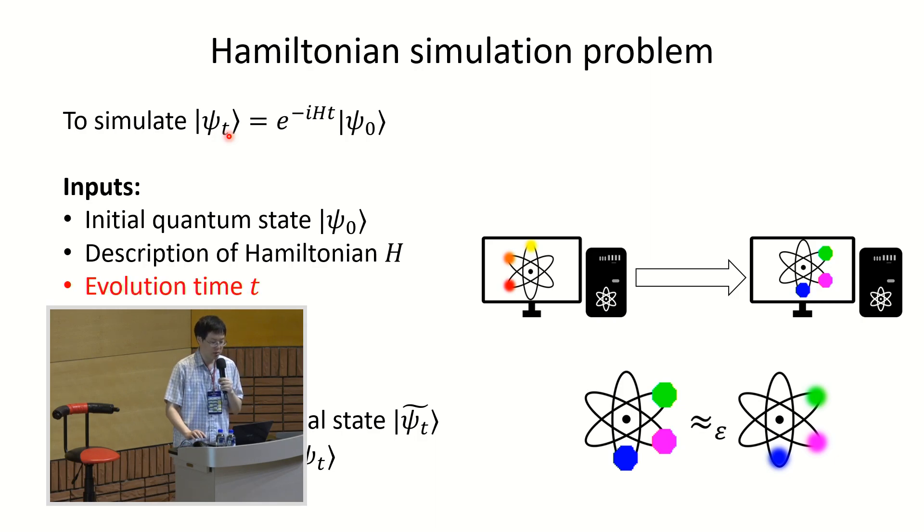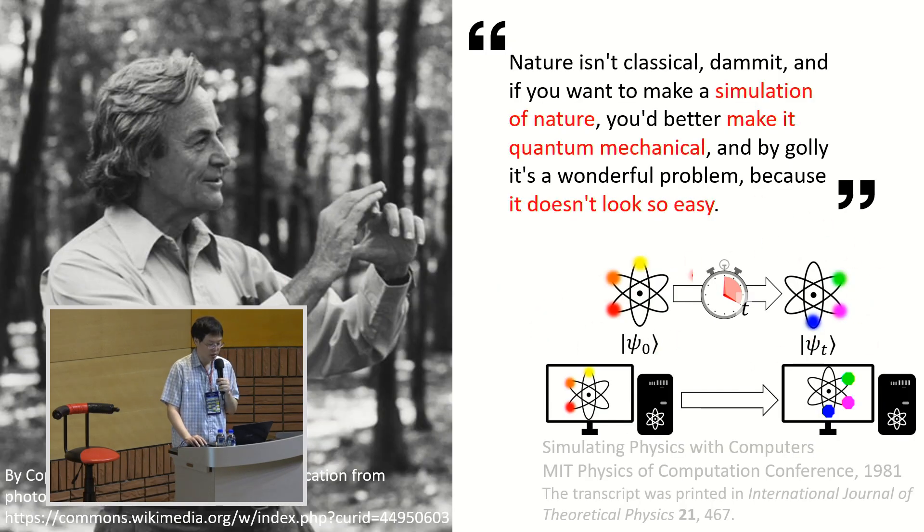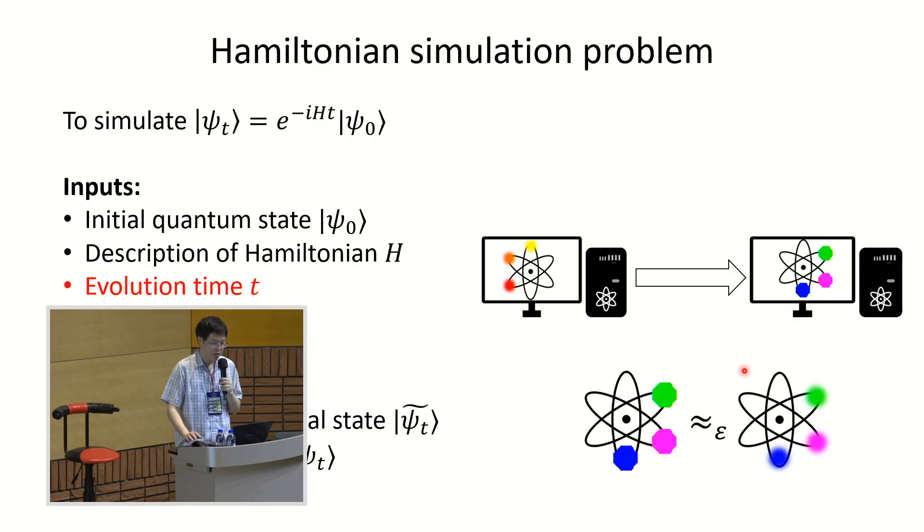So more formally, we have this Hamiltonian simulation problem. So go back to this picture a little bit. The idea is we have this nature that starts from some quantum state psi zero to another quantum state psi t. And we want to have a computer to do the same calculation. So we want to have a computer that starts with some state psi zero in its memory and calculate this psi t after some time. And we want to do this pretty fast. So in more precise form, we have this Hamiltonian simulation problem. We want to simulate this quantum state psi t, that's the time-evolved state of your Hamiltonian from psi zero.